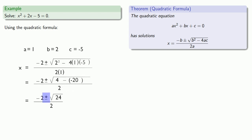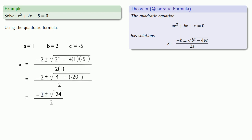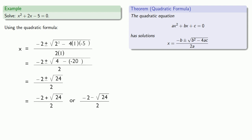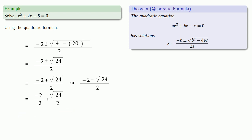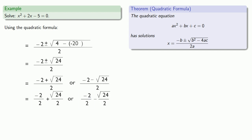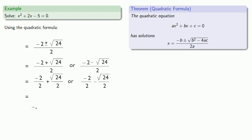It's useful to remember that the plus-minus symbol means we're either going to add the square root of 24, or subtract the square root of 24. It's convenient to rewrite this as two solutions. We have a fraction where the numerator is a sum or a difference, so we can split it into two fractions. Negative 2 over 2 plus square root of 24 over 2, and similarly for the second. Simplifying, negative 2 over 2 is just negative 1, giving us our final two solutions.